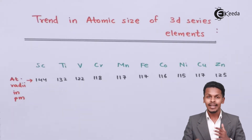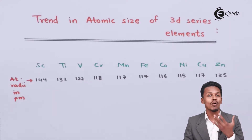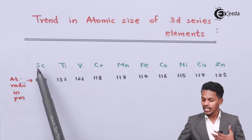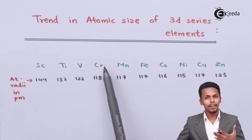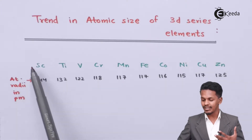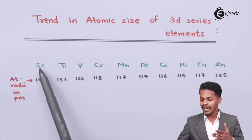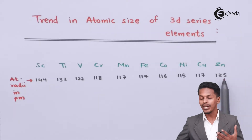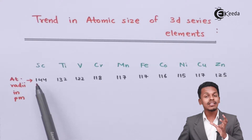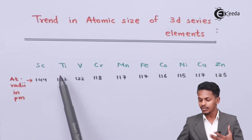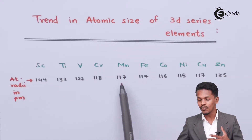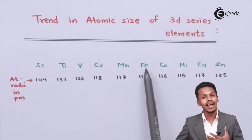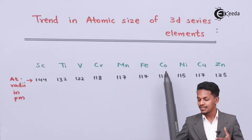However, it has not been observed that zinc is the smallest element in the 3d series. Looking at the data — comparing scandium, titanium, vanadium, chromium, manganese, iron, cobalt, nickel, copper, and zinc — the atomic radii in picometers show that scandium has 144 pm and zinc has 125 pm. There is a decrease from 144 to 132, 120, 118, and around 117 for manganese and iron.